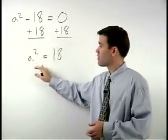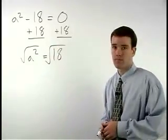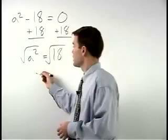So to get a by itself, we square root both sides of the equation. On the left, the square root of a squared is a.